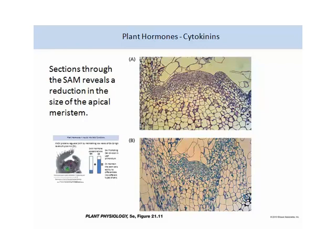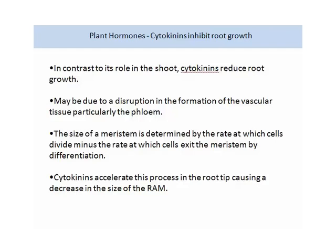Cytokinin can inhibit root growth. In contrast to its role in the shoot, cytokinin reduces root growth. This may be due to disruption of the formation of vascular tissue, particularly the phloem. The size of a meristem is determined by the rate at which cells divide, minus the rate at which cells exit the meristem by differentiation. Cytokinins accelerate this process in the root tip, causing a decrease in the size of the root apical meristem.